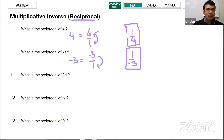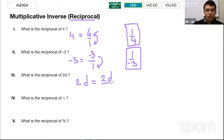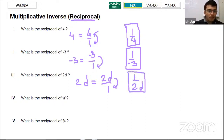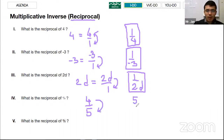Most of the time we just say reciprocal — it's the shortest way. What is the reciprocal of 2d? Well, 2d equals 2d over 1, so when you flip it, the reciprocal is 1 over 2d. For fractions like 4 over 5, it's already in fraction form, so you just flip top and bottom to get 5 over 4.